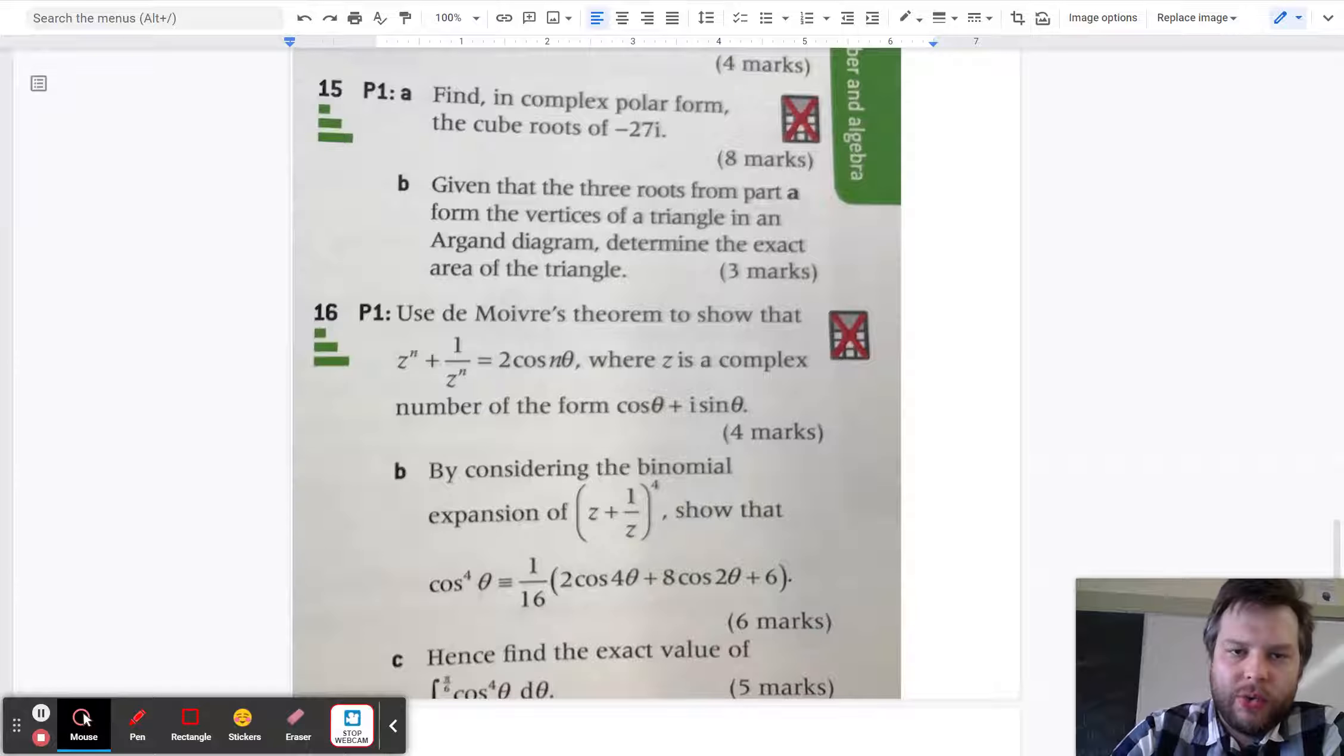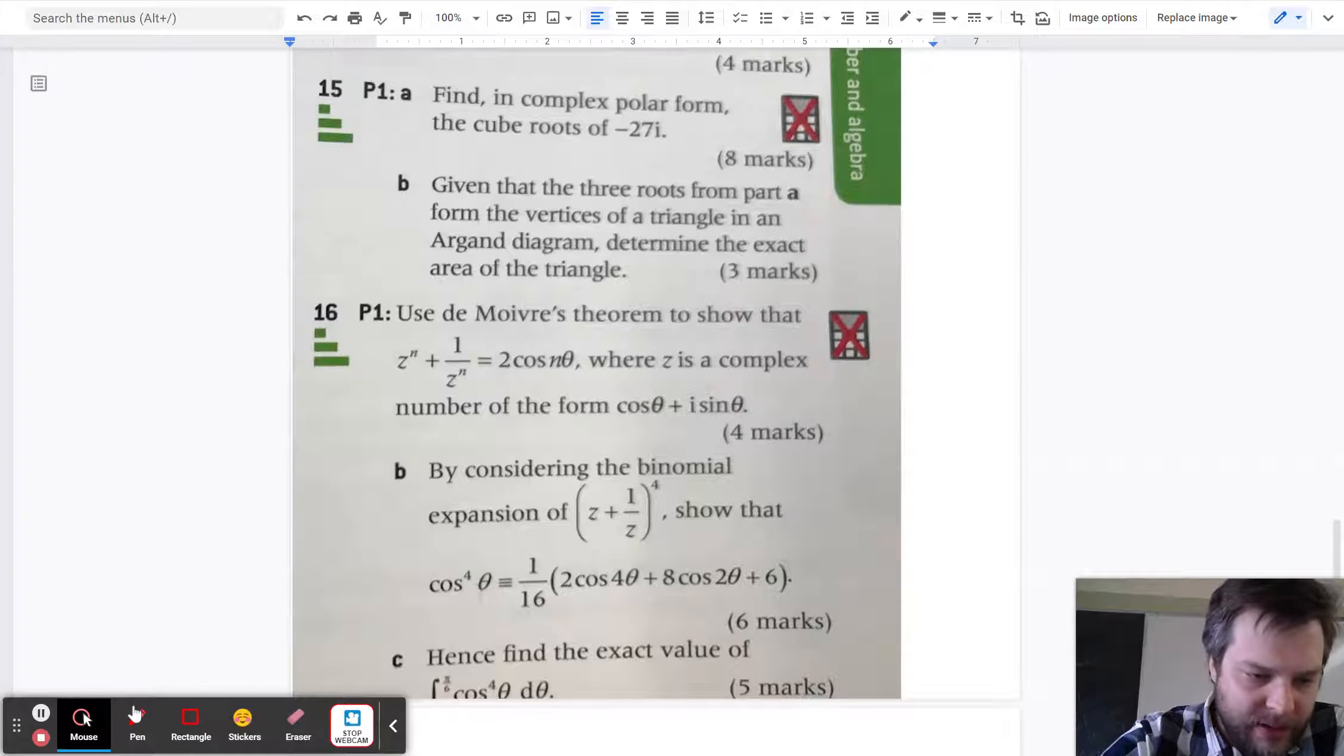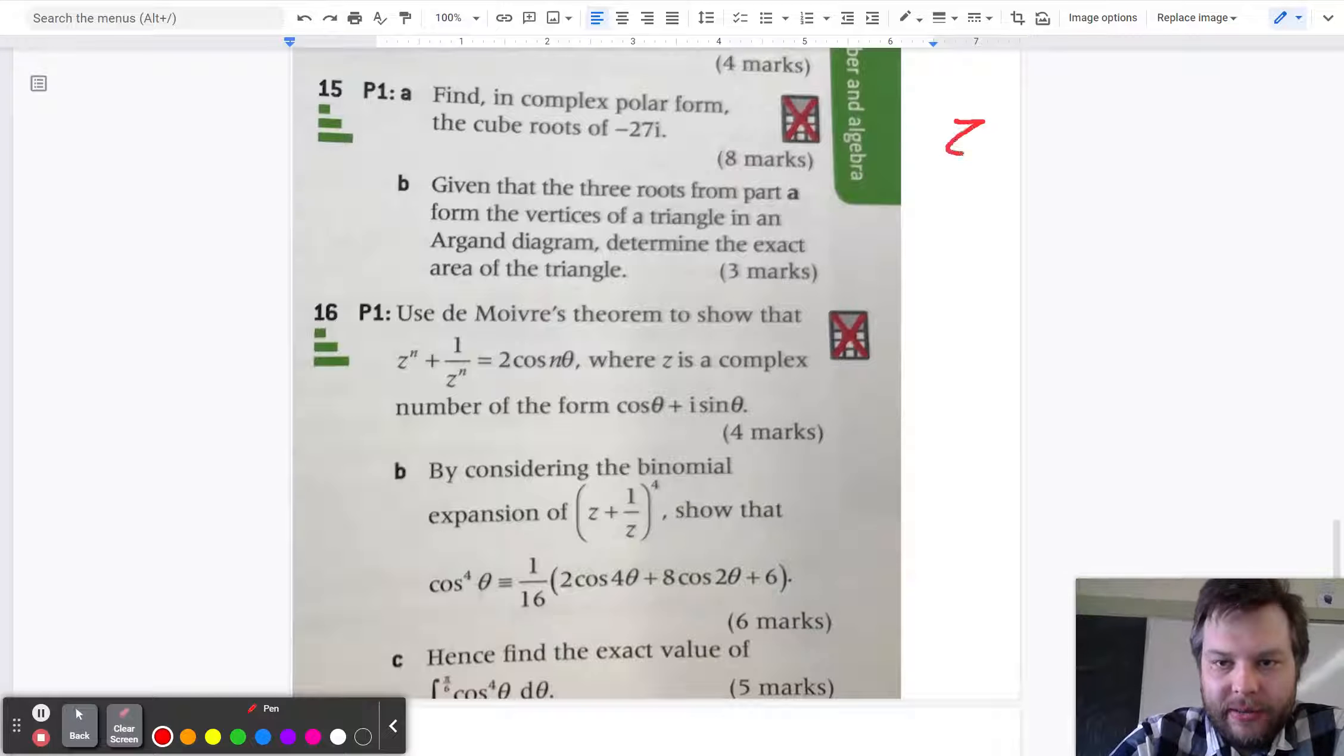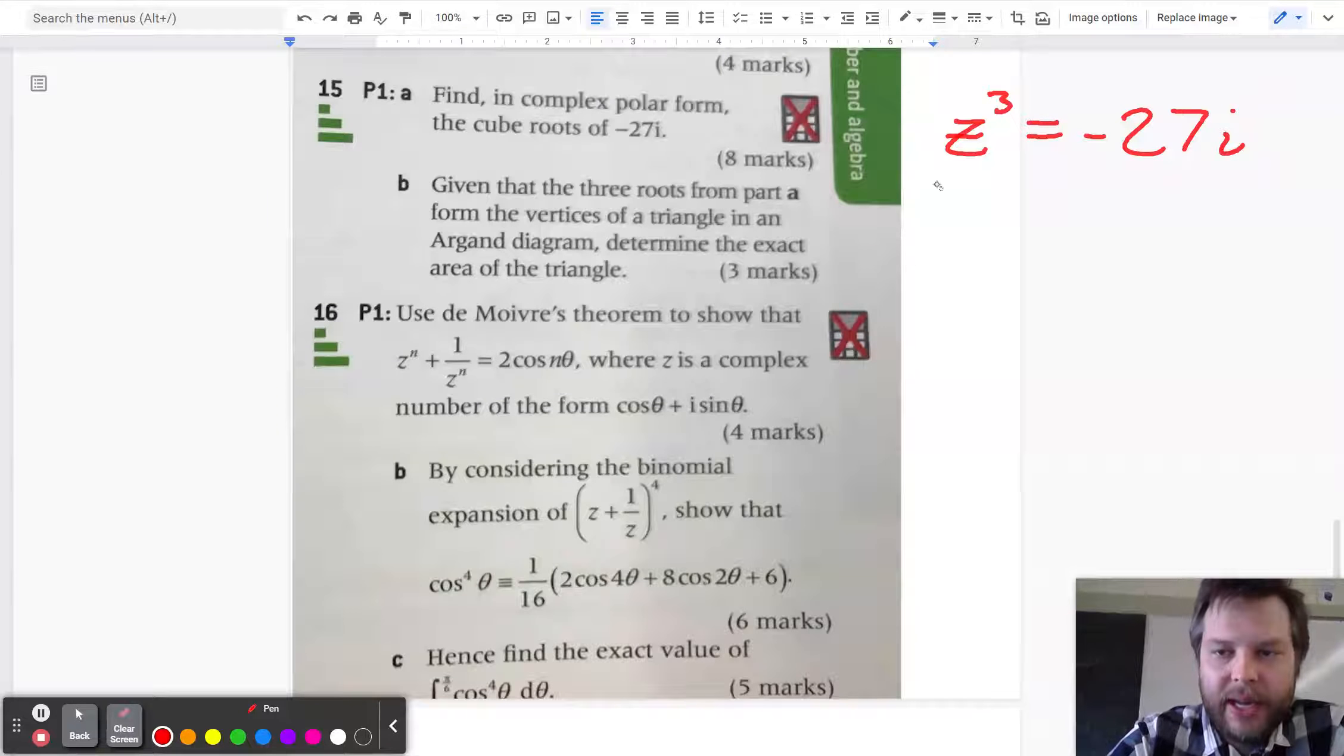So find the cube roots of negative 27i. In other words, we are asked to solve the equation z cubed equals negative 27i.